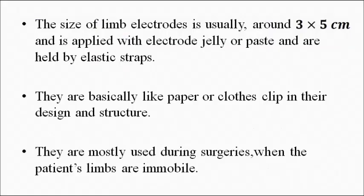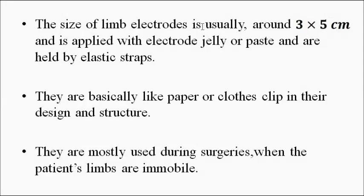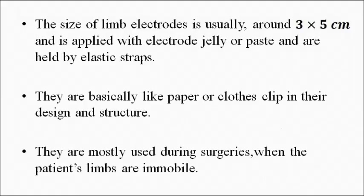The skin contact impedance associated with limb electrodes ranges from 2 to 5 kilo-ohms — generally on the order of kilo-ohms. The size of limb electrodes is generally on the order of 3 by 5 cm. Electrode jelly or paste is used to achieve good contact at the straps, which hold the electrode to a specific body part — the legs or arms.